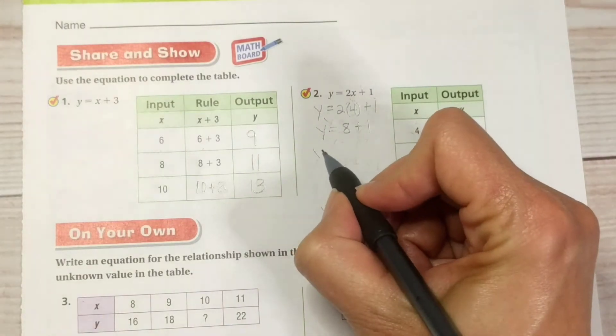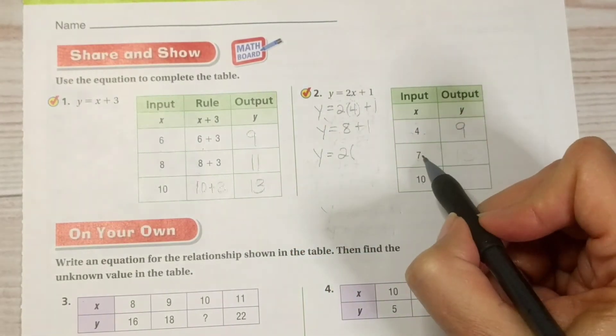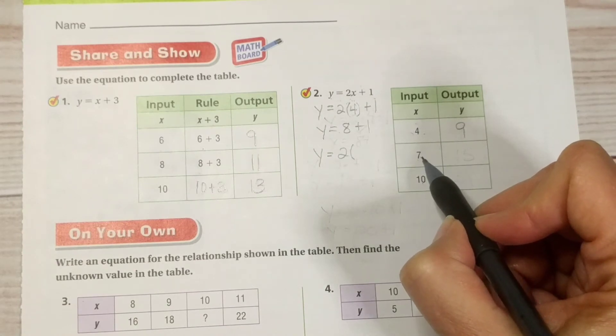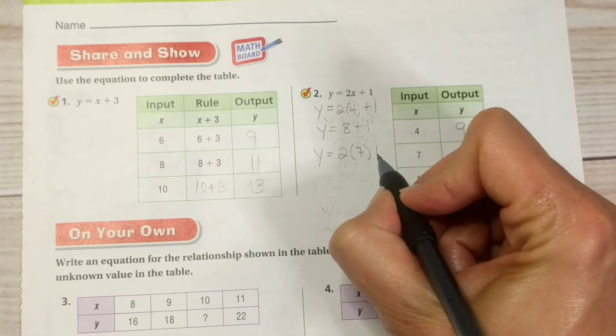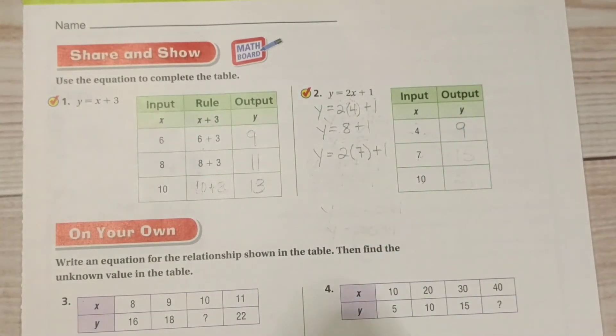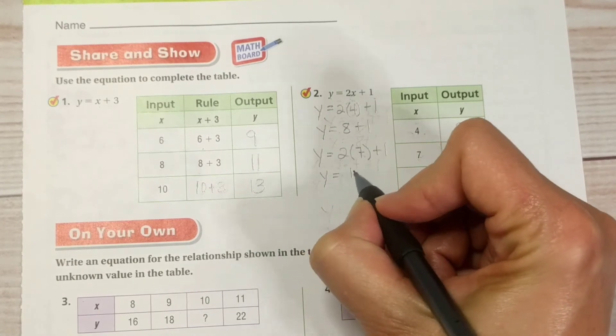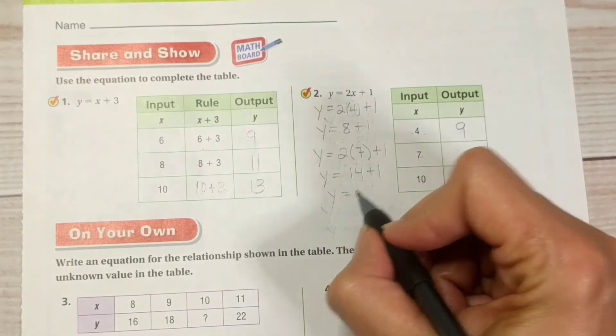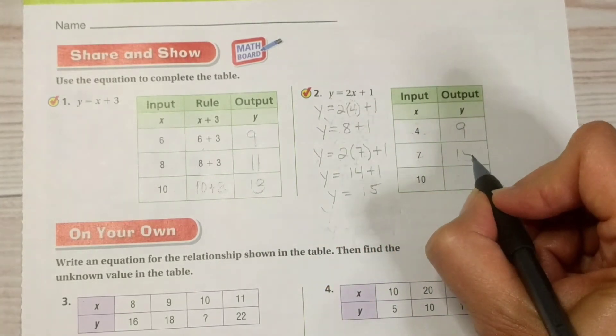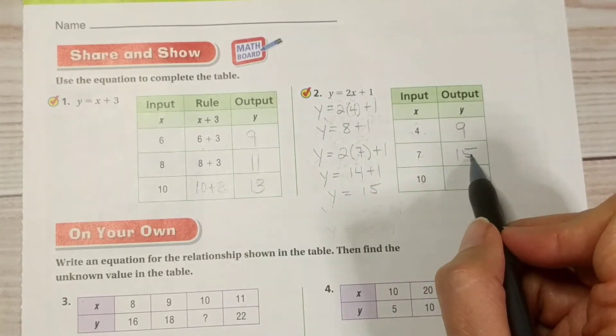Okay, let's do that again. Y equals 2 times 7 plus 1. 2 times 7 is 14. So, Y equals 14 plus 1. So, Y equals, in this case, when X equals 7, Y equals 15.